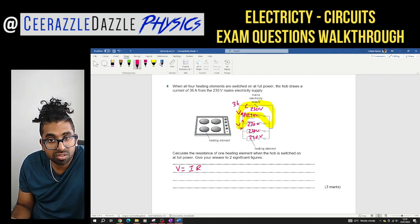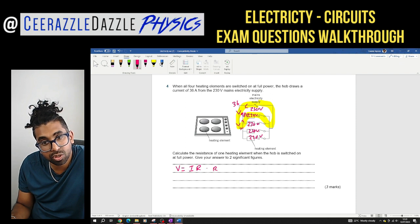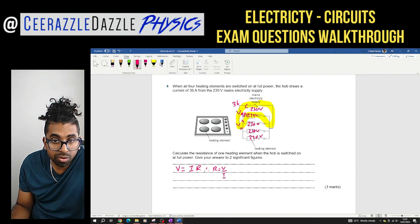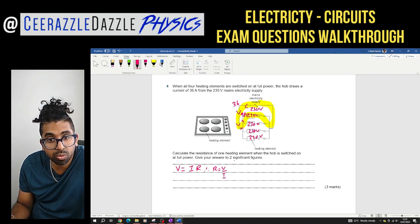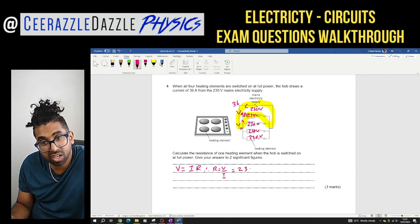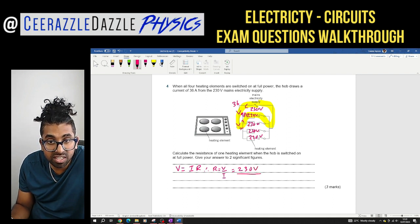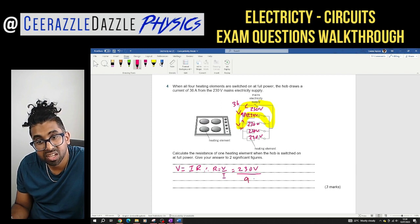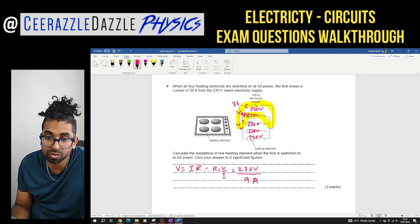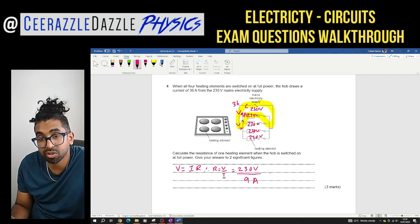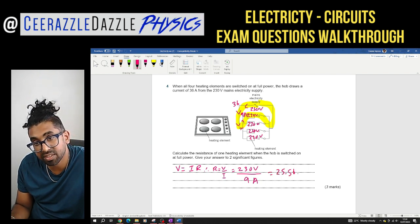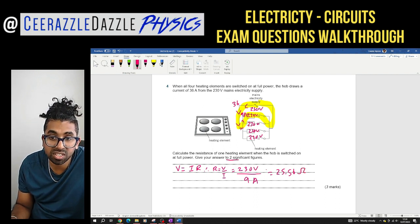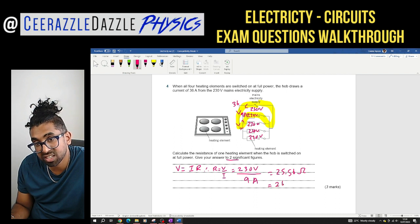We know the voltage, obviously, between each one is 230 volts between each heater. The current, don't forget, the 36 splits into four into nine amps. So 230 volts divided by nine amps. So 230 volts divided by nine amps, I'm going to get 25.56 ohms over here. But obviously to 2 significant figures, it's going to be 26 ohms. Wonderful stuff.